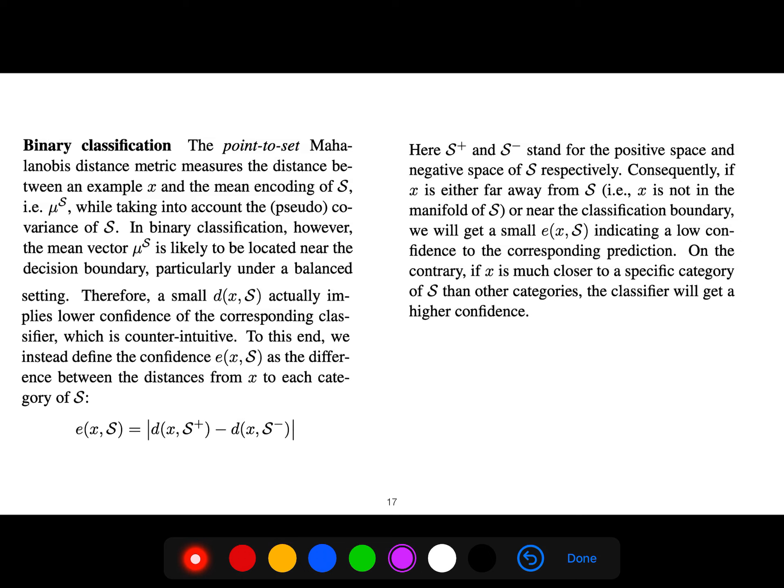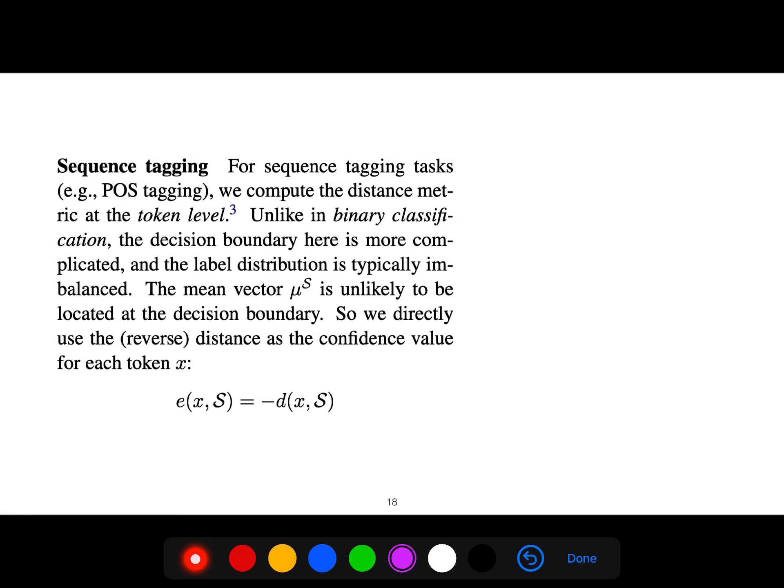To this end, we instead define this confidence as the difference between distances from x to each category of S, because in binary classification we have two categories: positive and negative. And then we have for sequence tagging tasks, for example part-of-speech tagging, we compute the distance metric at the token level. Unlike binary classification, the decision boundary here is more complicated and the label distribution is typically imbalanced. The mean vector is unlikely to be located at the decision boundary, so we directly use the reverse distance as the confidence value for each token.